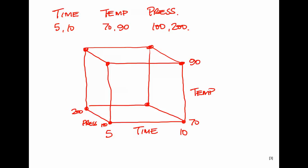You could put any variable into this pattern. For a molding machine it could be hold time, front tool temperature, back tool temperature, injection time, or injection pressure. It doesn't matter what the process is — if you're testing three variables, this cube pattern is the design space, and that is what a designed experiment is. Logically deciding your own tests using skill is just a one-factor test, and you'll find out very little that way.